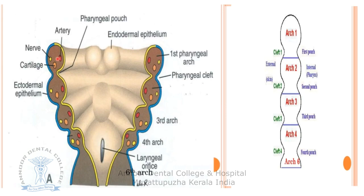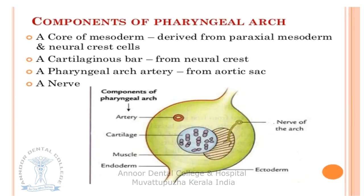Each pharyngeal arch contains skeletal elements — cartilage that may later form bones — striated muscles, nerves, and arterial arches. The components of the pharyngeal arch are cartilage, muscles, nerve, and artery. Cartilage becomes formed into bone, muscles are supplied by nerves, and arteries are also present.